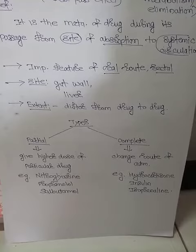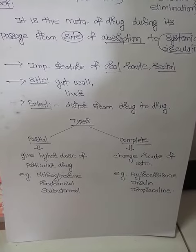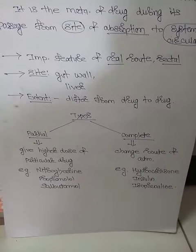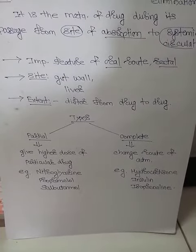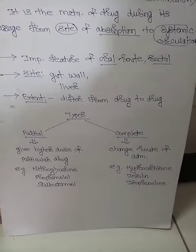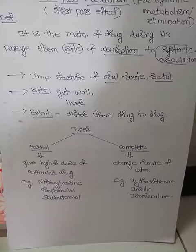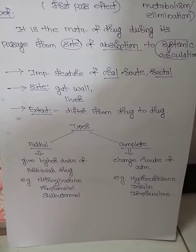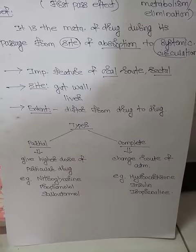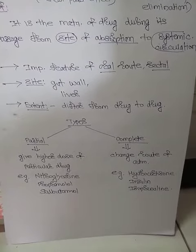The second type is complete first pass metabolism, where there is complete inactivation of the drug. In this case, you have to change the route of drug administration, as that is the only option remaining. Examples of drugs undergoing complete first pass metabolism include hydrocortisone, insulin, and isoprenaline.